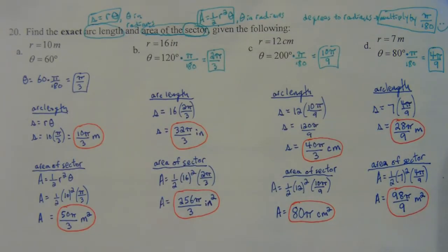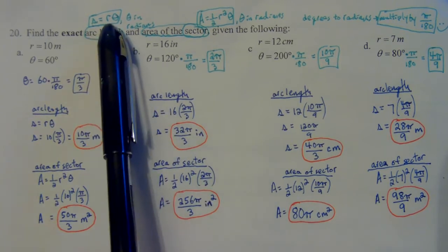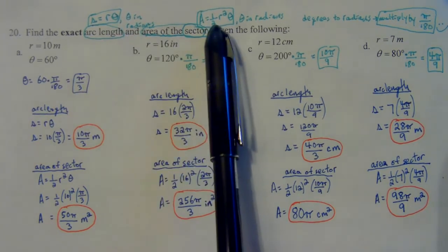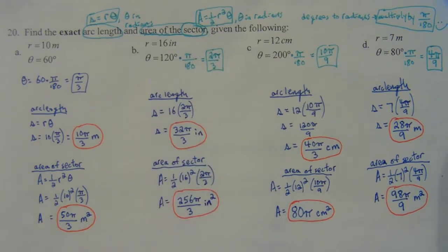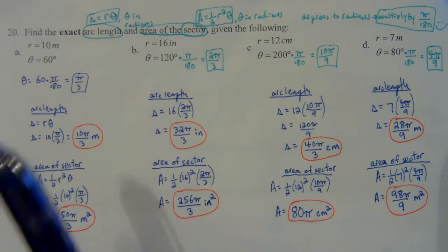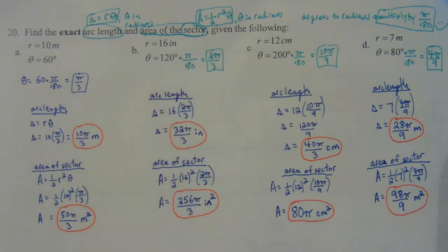Arc length and area of a sector - really quick, really easy problems. Arc length formula: s equals r theta. Area of a sector formula: a equals one half r squared theta. For both of those formulas to work, theta must be in radians. So if we give it to you in degrees, the way you switch to radians is you multiply by pi over 180.